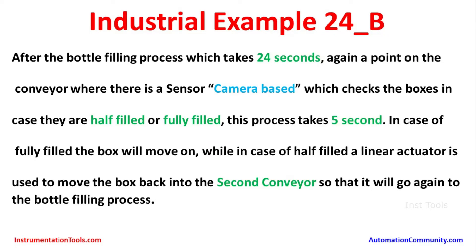After the bottle filling process, which takes 24 seconds, the motor runs again. At a certain point on the conveyor there is a camera-based sensor which checks whether the box is half filled or fully filled. This process takes around 5 seconds. In case of fully filled, the box moves on, while in case of half filled a linear actuator moves the box back onto a second conveyor so it will go again to the bottle filling process.